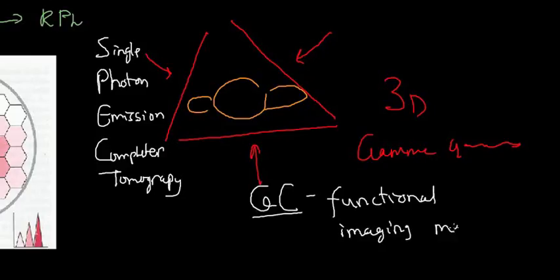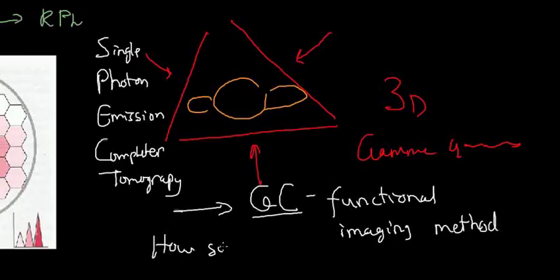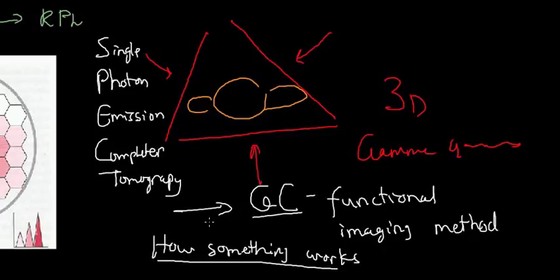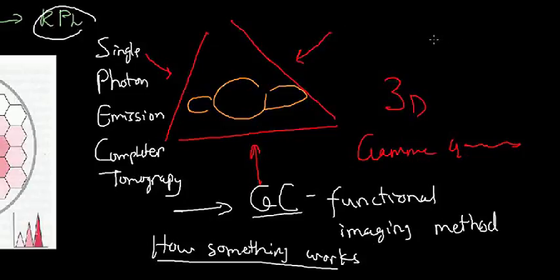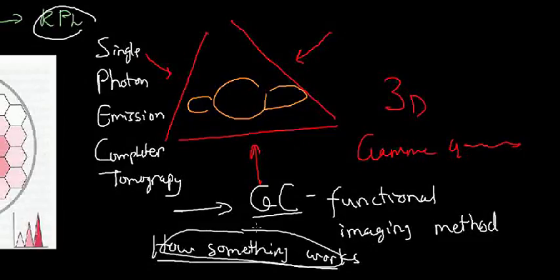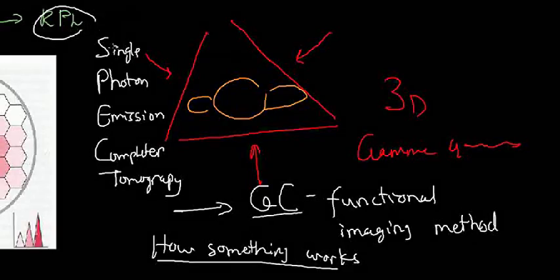An important point: a gamma camera is a functional imaging method. It's not like an X-ray or CT scan that shows you how something looks — a gamma camera shows you how something works. This is because I use a radiopharmacon that has a specific role: it goes to a specific organ, like the kidneys, and settles there, so I can see how the kidneys filter the blood. It gives information about how specific processes work, with respect to the type of molecule I chose to inject. Hopefully you found this helpful — see you in the next video.